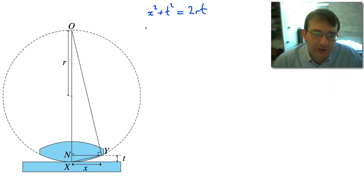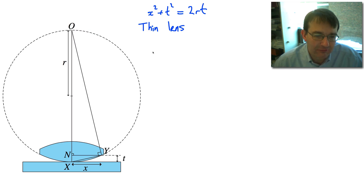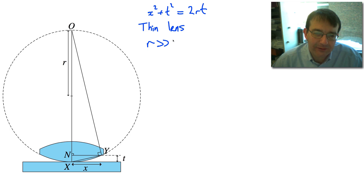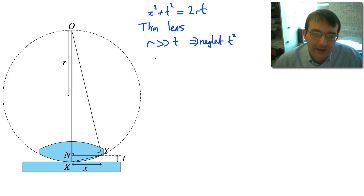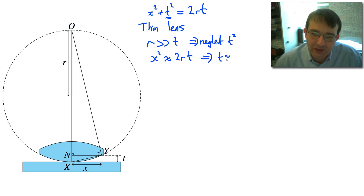We now use the thin lens approximation. Because we're assuming a thin lens, it has a very large radius of curvature R, meaning the surface doesn't curve very much. This means R is much greater than the thickness T of the wedge, so we can neglect terms of T squared or higher. Applying this approximation, we find that X squared is approximately equal to 2 times the radius of curvature times the thickness T. Therefore, the thickness of the wedge is approximately T equals X squared over 2R.